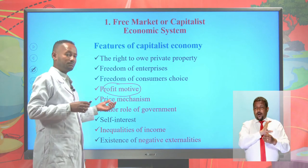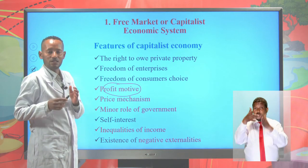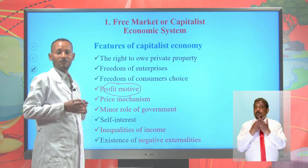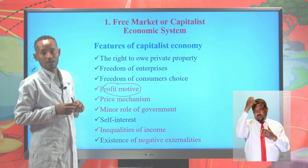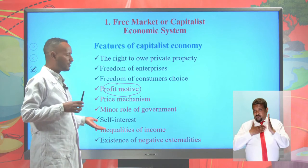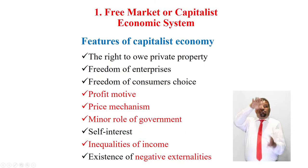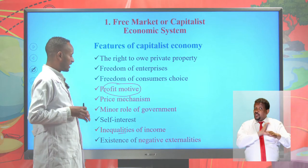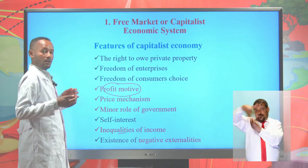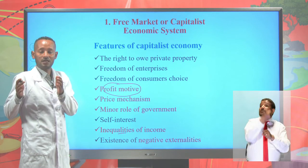Another feature is the price mechanism — price is used to allocate resources and determine the demand and supply of a commodity. There is also a minor role of government; government intervention is minimum under the capitalist economic system. There is self-interest. Another feature is inequality of income — the gap between the poor and the rich is very high. There is also existence of negative externalities. Negative externalities means the action of one party negatively affects the livelihood of others.